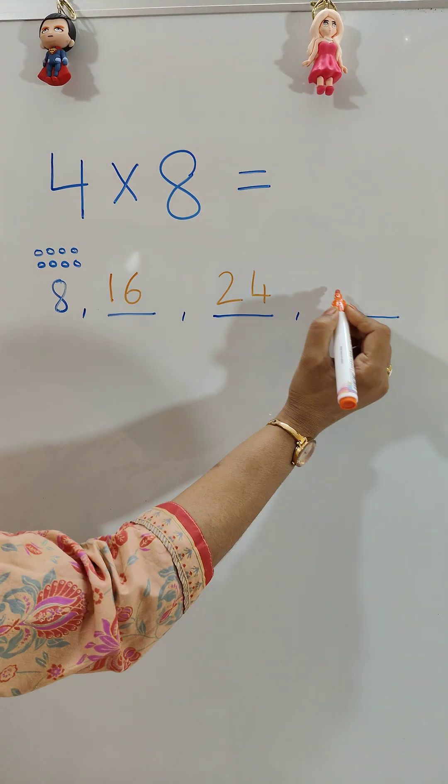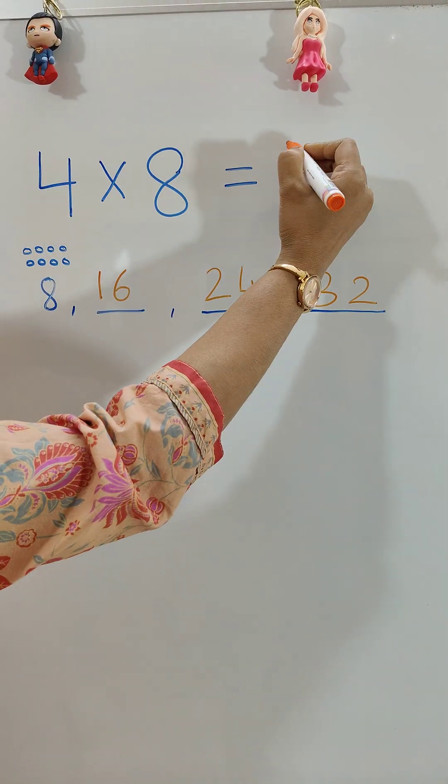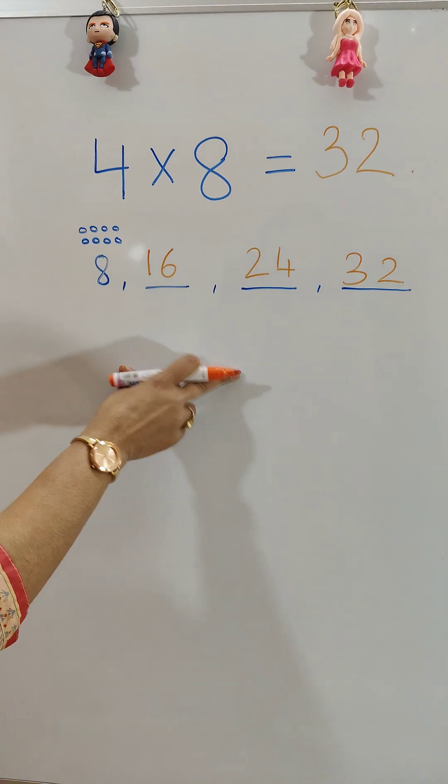So 4 times 8 equals 32. If we don't know the times table, we can do skip counting and get the answer.